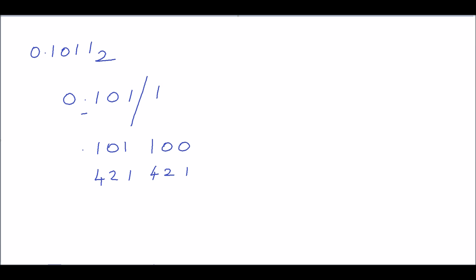The weights associated with the binary positions are 1, 2, 4. For the first group 101: (1×1) + (0×2) + (1×4) = 5. For the second group 100: (1×1) + (0×2) + (0×4) = 1... wait — (0×1) + (0×2) + (1×4) = 4. So the result is point 5 and 4.